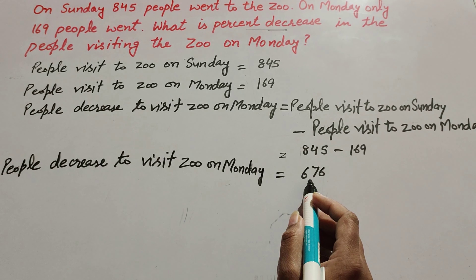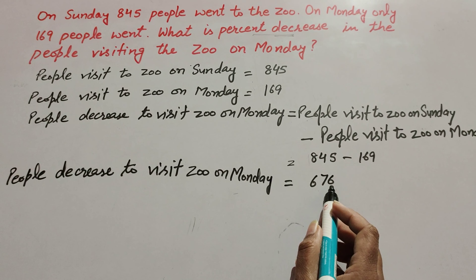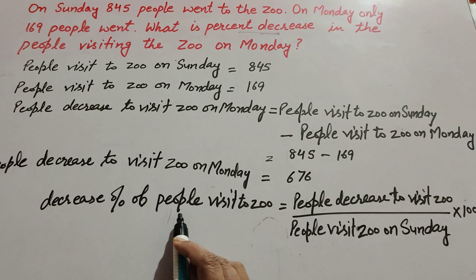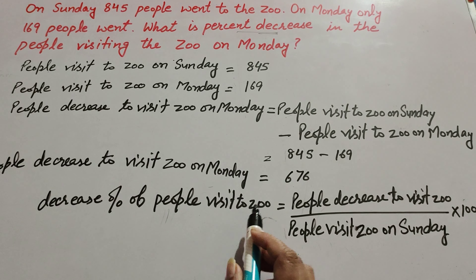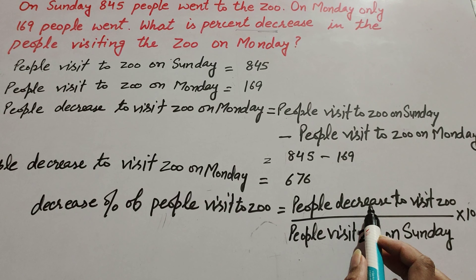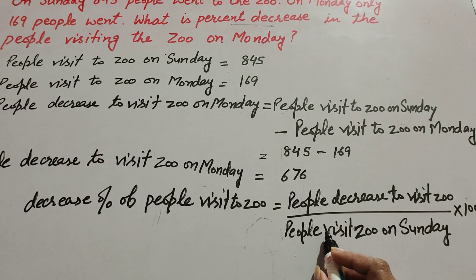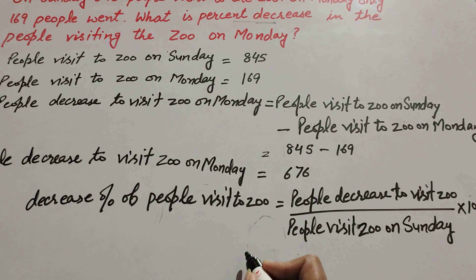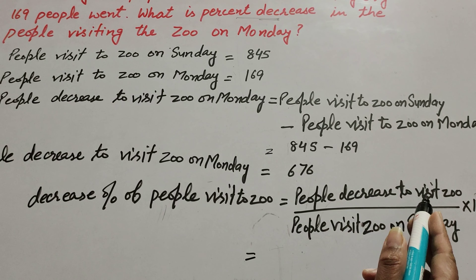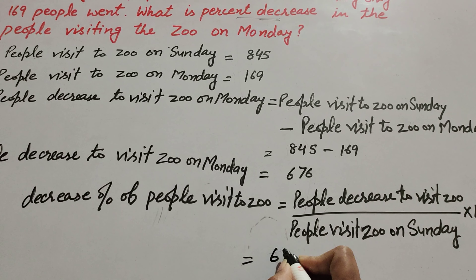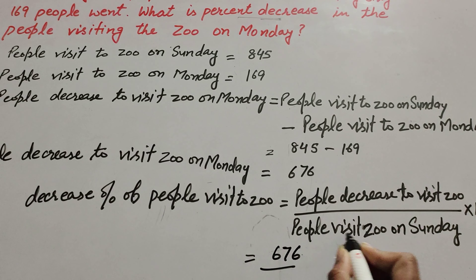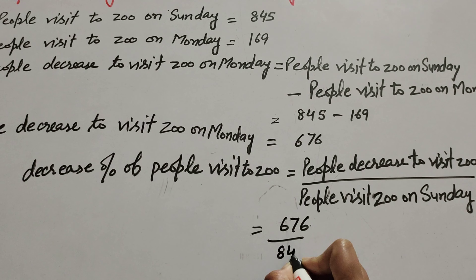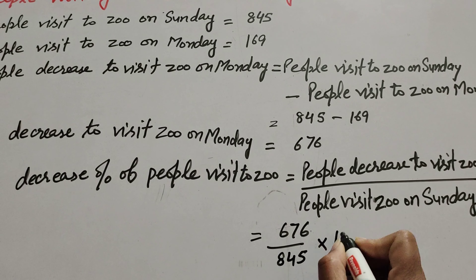Now we find the decreased percentage of people visiting on Monday. Decreased percentage equals people decreased over people who visited on Sunday, multiplied by 100. People decreased is 676, over people on Sunday which is 845, multiplied by 100.